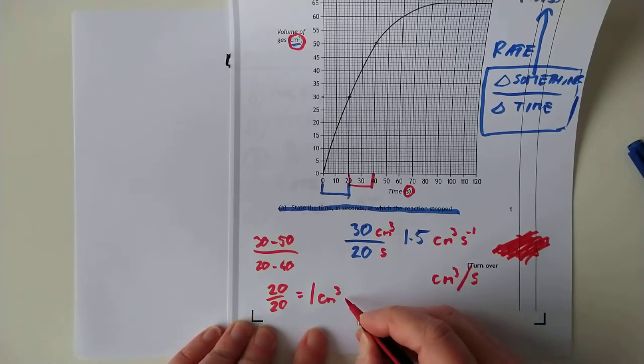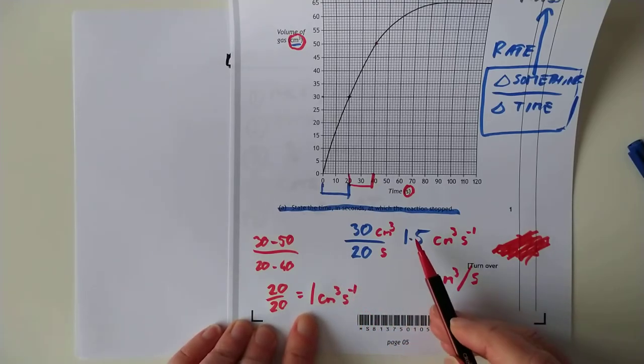Which comes out to be one centimeter cubed per second. Am I still on camera? Yes, I am. See that? The rate's slowing down.